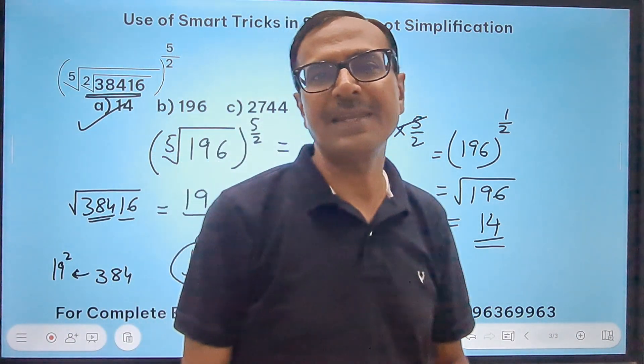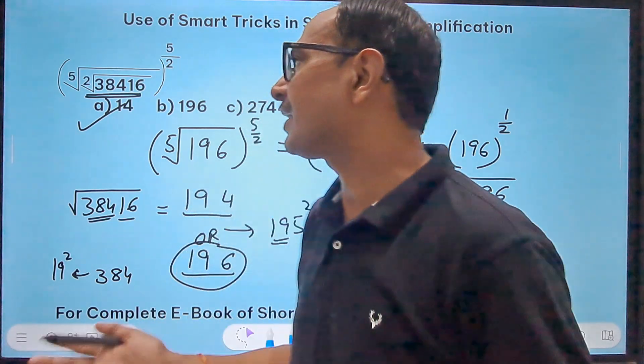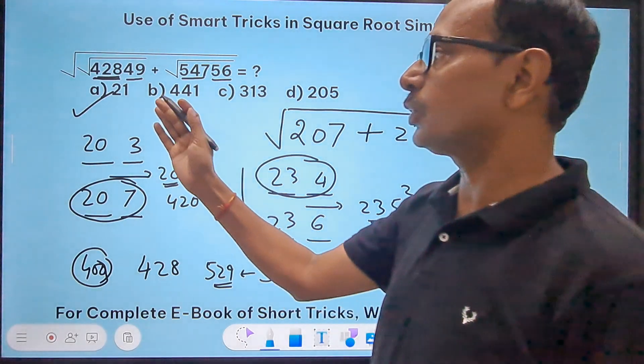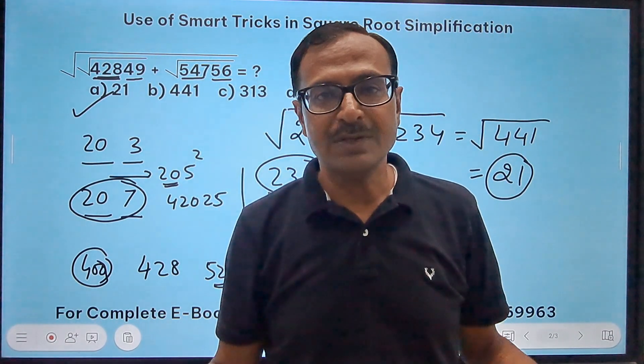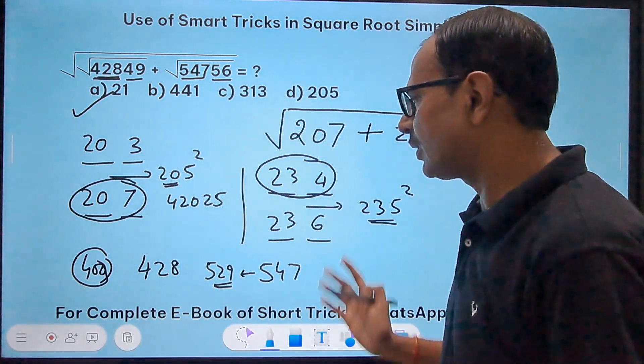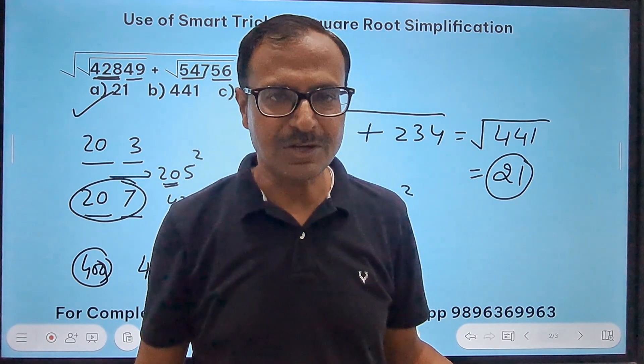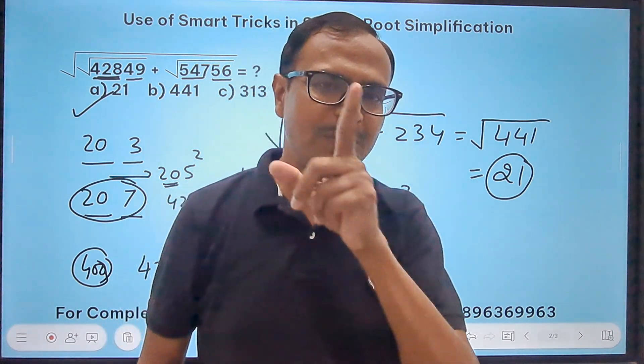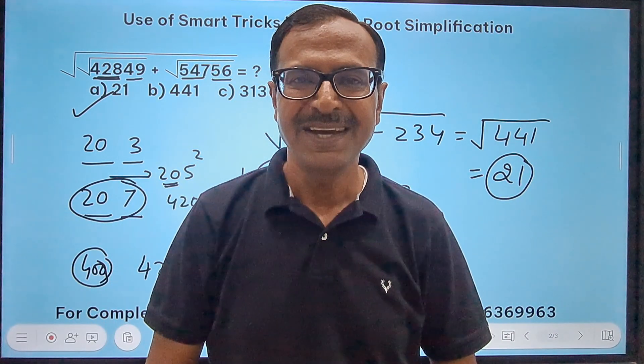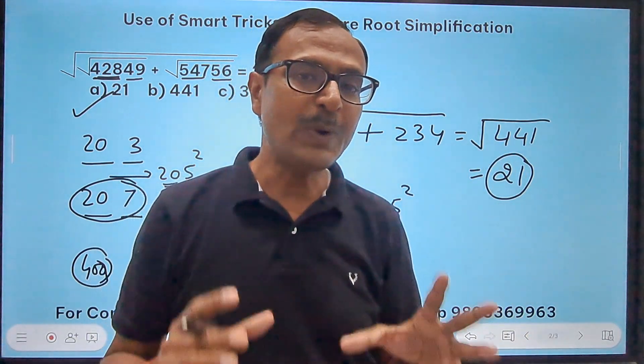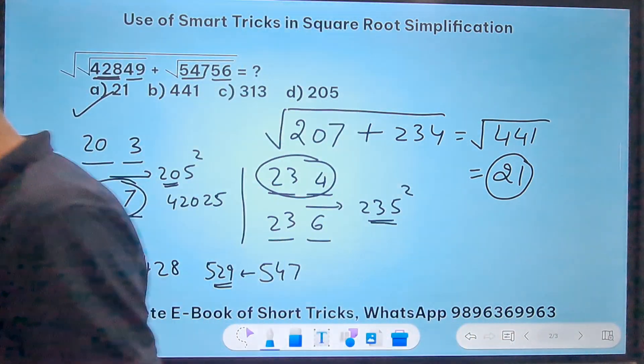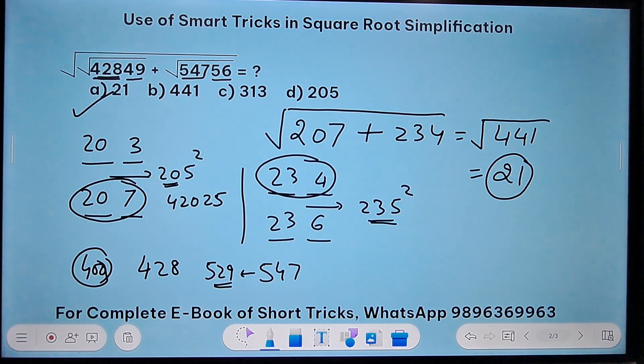Now see, smart tricks and smart things to do. Otherwise, if you do factorization of these big numbers like 38416 and some other numbers which we have taken up here, it's going to consume ages solving these questions. So smart tricks are what you require, and simplification problems will not be a trouble for any one of you. So friends, if you like this video, do share it with all your friends on your WhatsApp groups and various social media platforms. And do not forget to practice 10-20 such questions to feel more comfortable. All the best for your practice. Thank you.